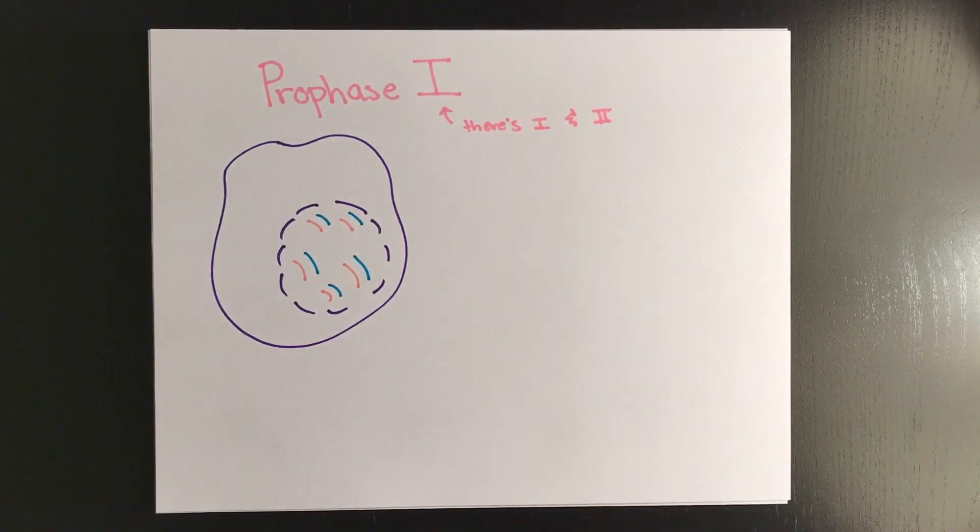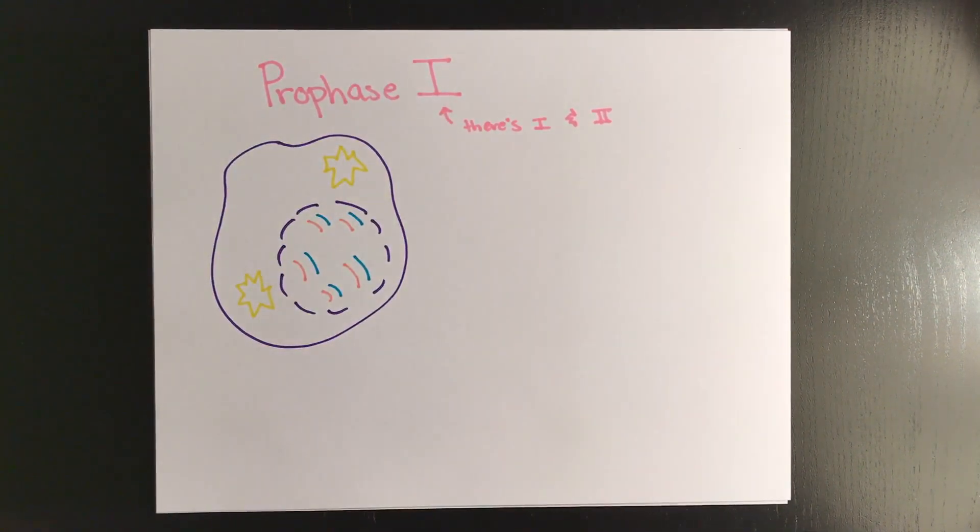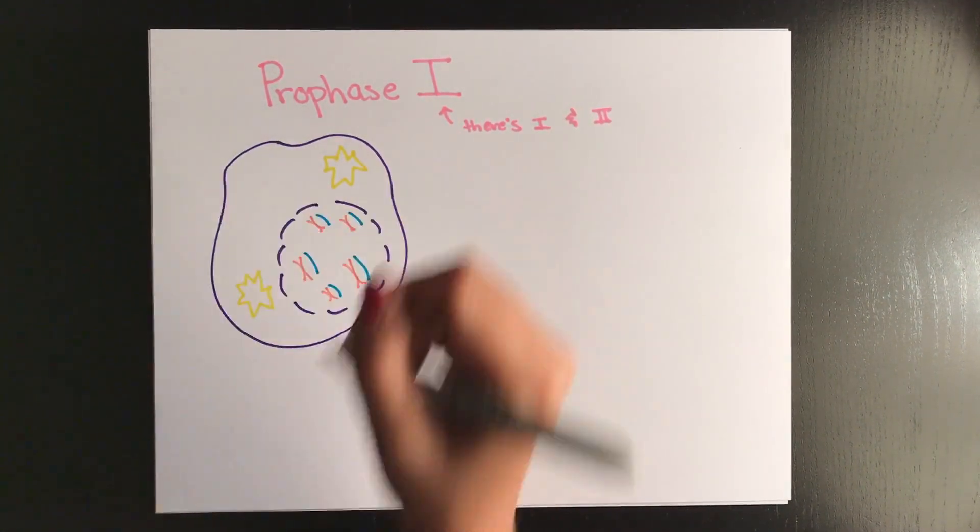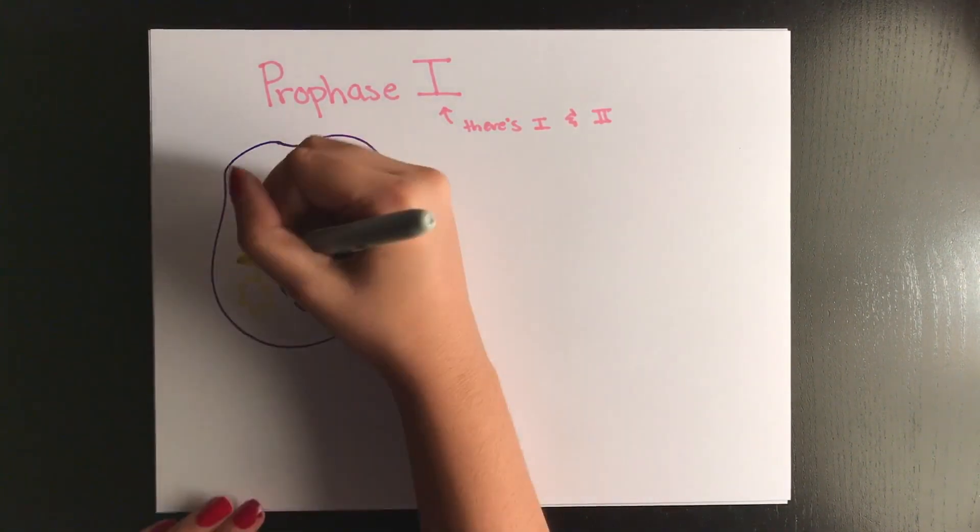So you're going to have one by mom for blue eyes, one by dad for brown eyes. Together, those two chromosomes that carry those two traits are called homologous chromosomes. Because this takes a while, prophase 1 is the longest phase of meiosis.